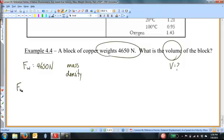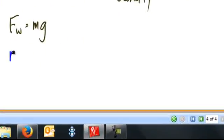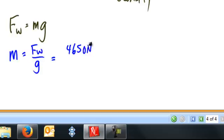The equation for weight. The weight is equal to the mass times the acceleration due to gravity. And the density equation. Density is mass per volume. I'm looking for the volume. Let's put those equations together. Let's solve for the mass. The mass is the weight divided by the acceleration due to gravity. The 4650 newtons divided by 10 meters per second squared. And we get that the mass of this copper is 465 kilograms.